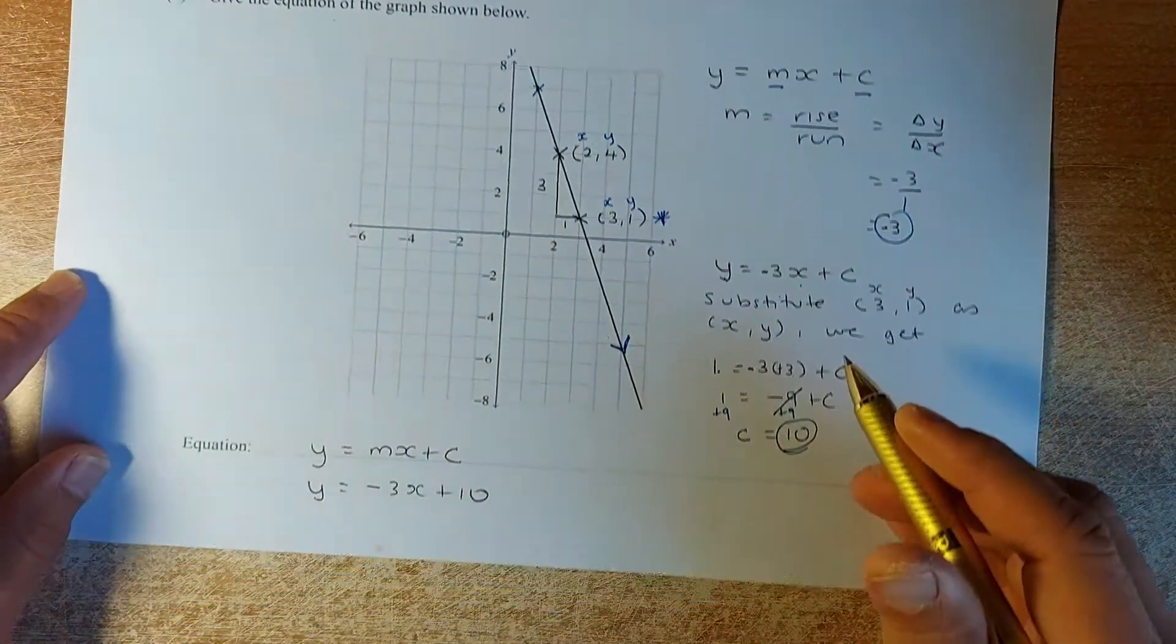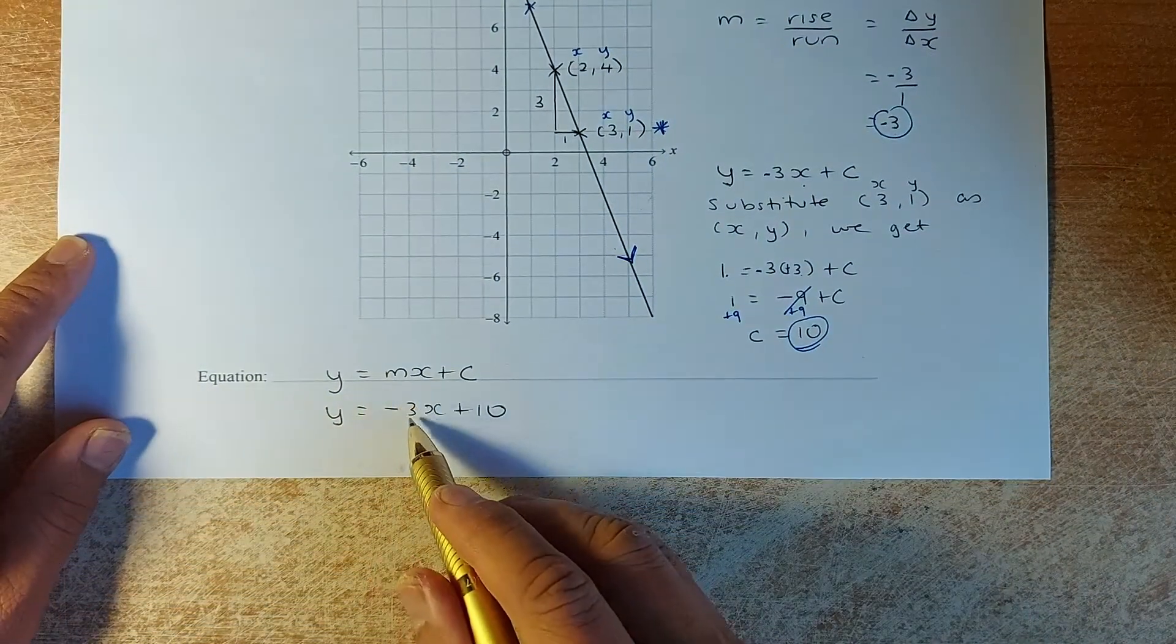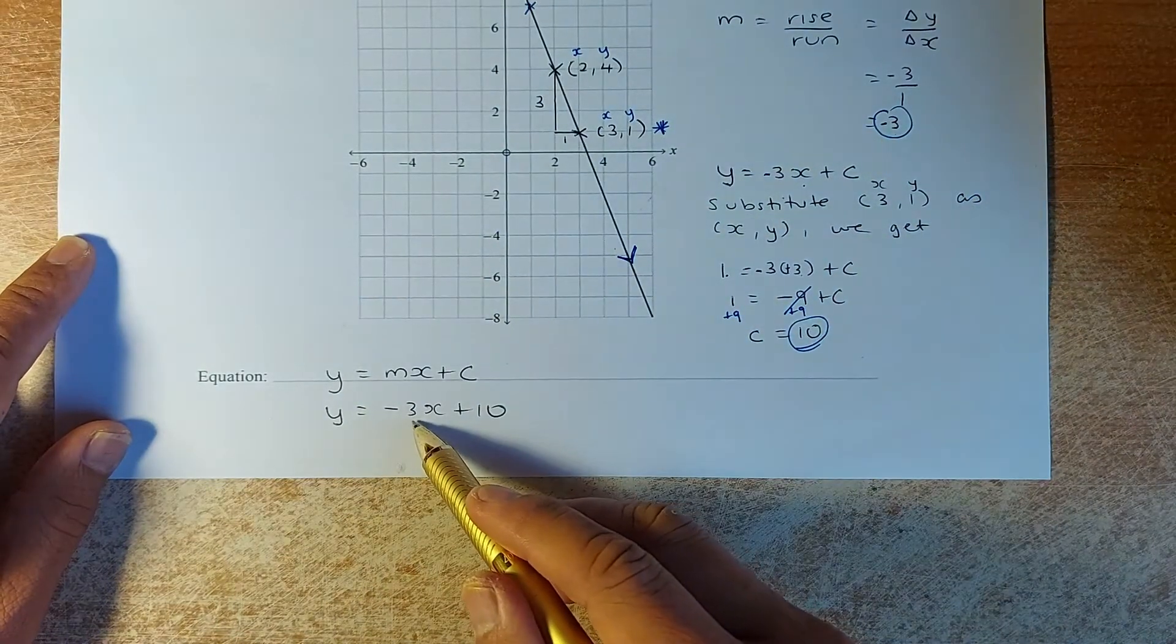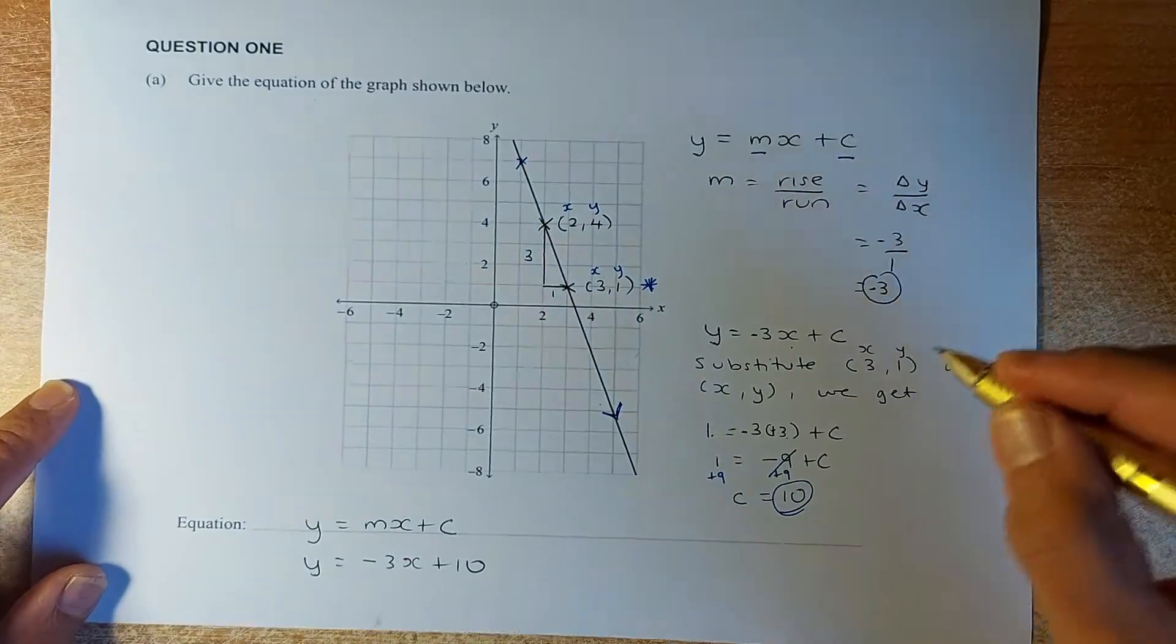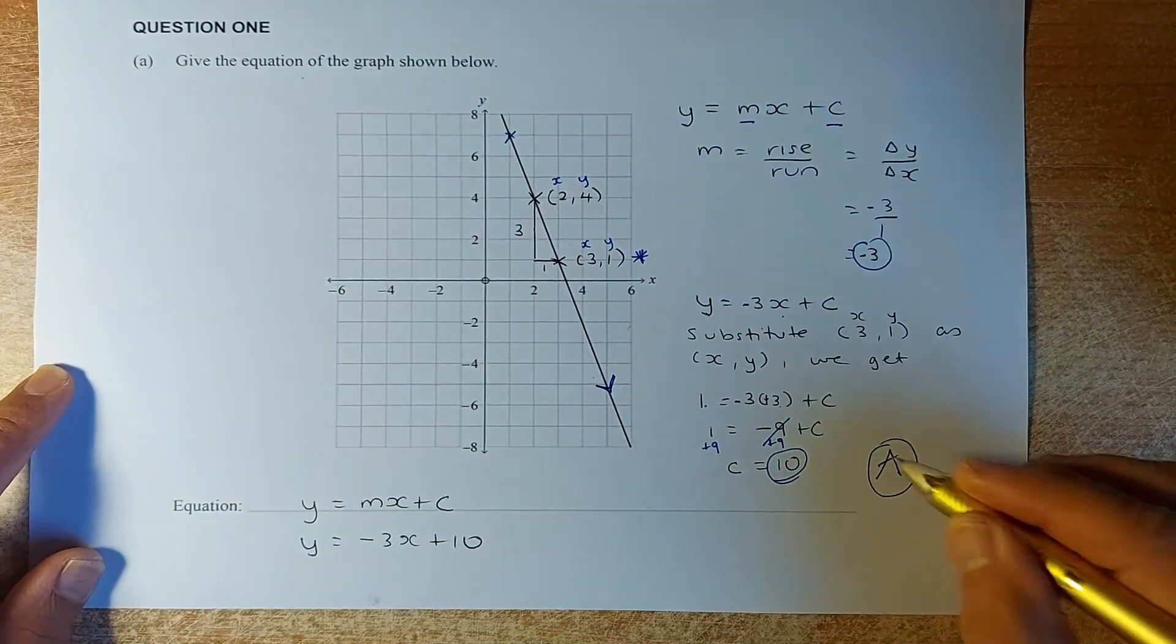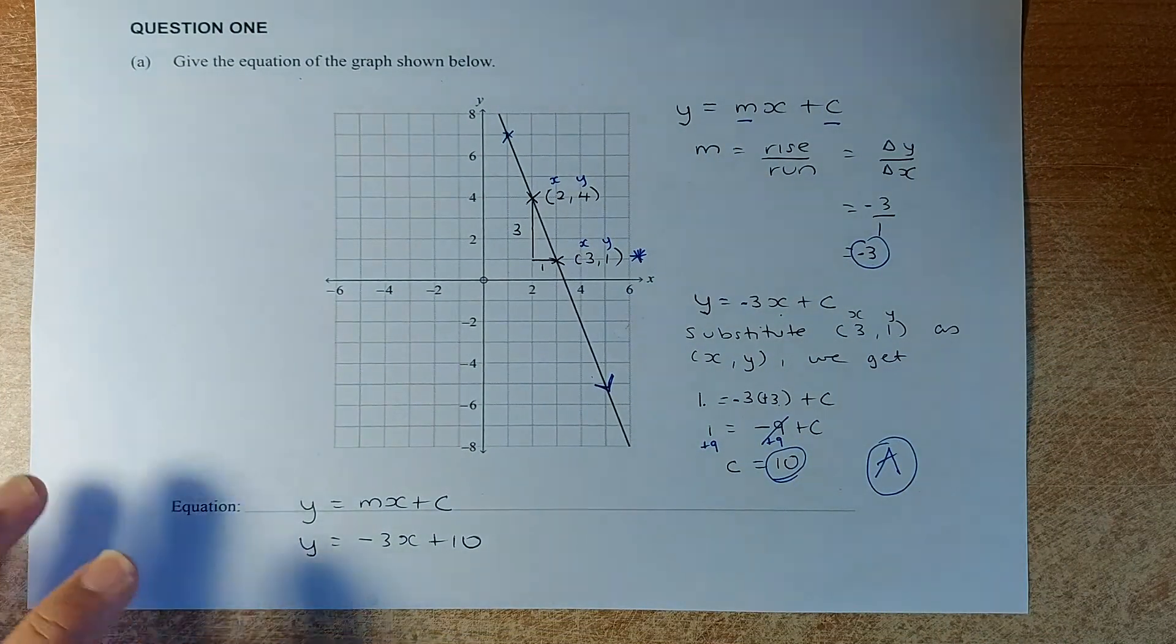So c equals to 1 plus 9 equals to 10. So once you've found your c and your m, put it back into this equation. So the equation is going to be y equals to negative 3x. Your gradient is negative 3x. And the y intercept is going to be 10. So that will give you an achieve in that question. Not too bad, right?